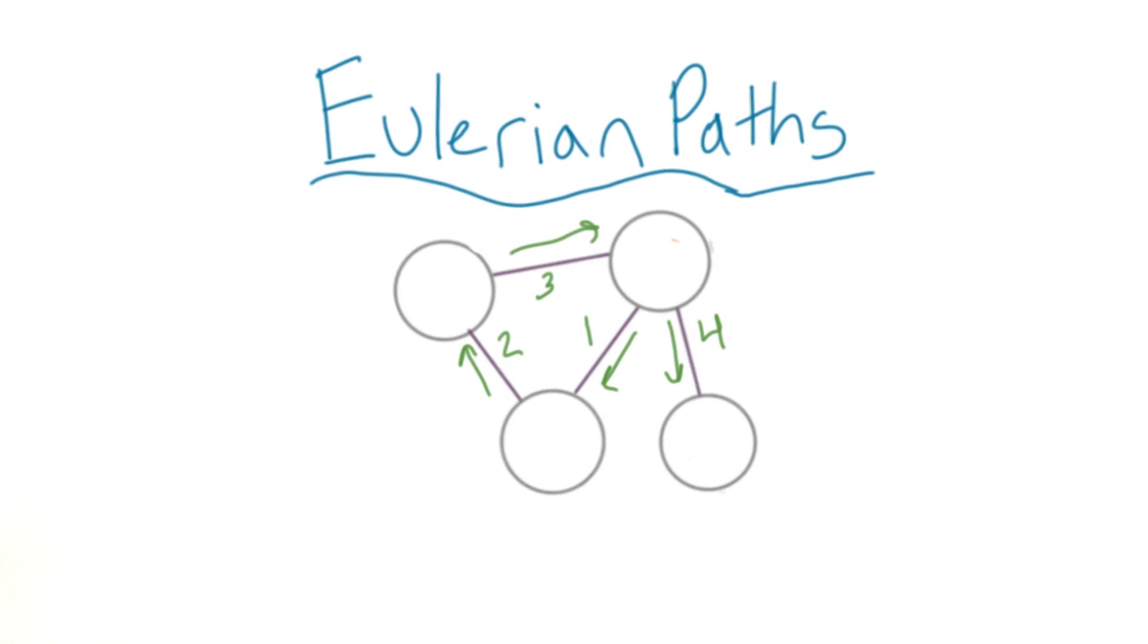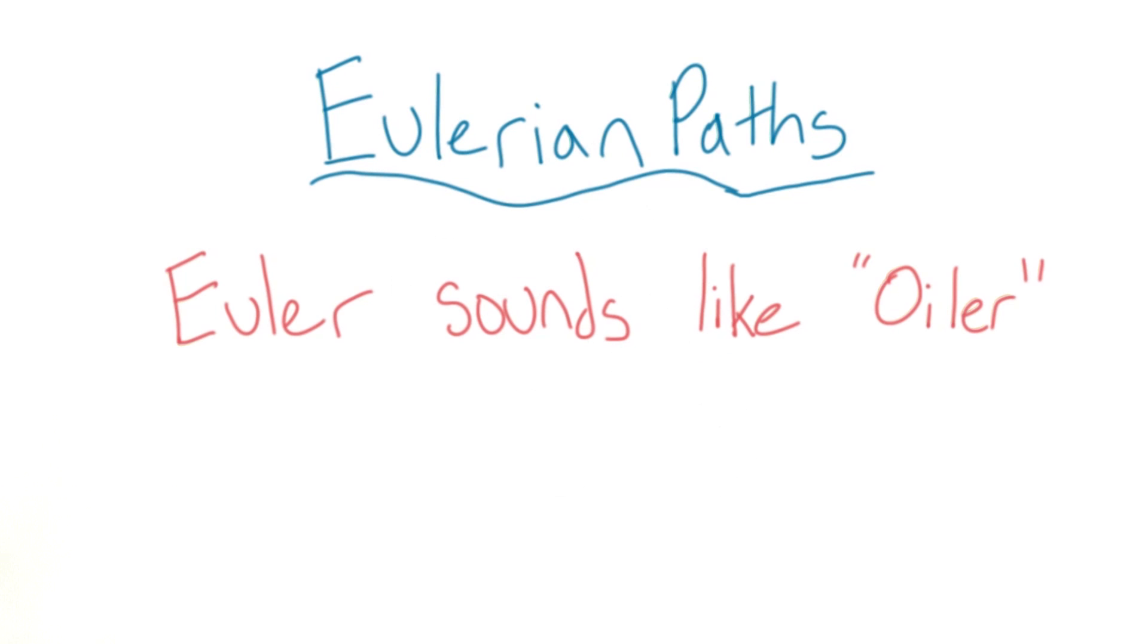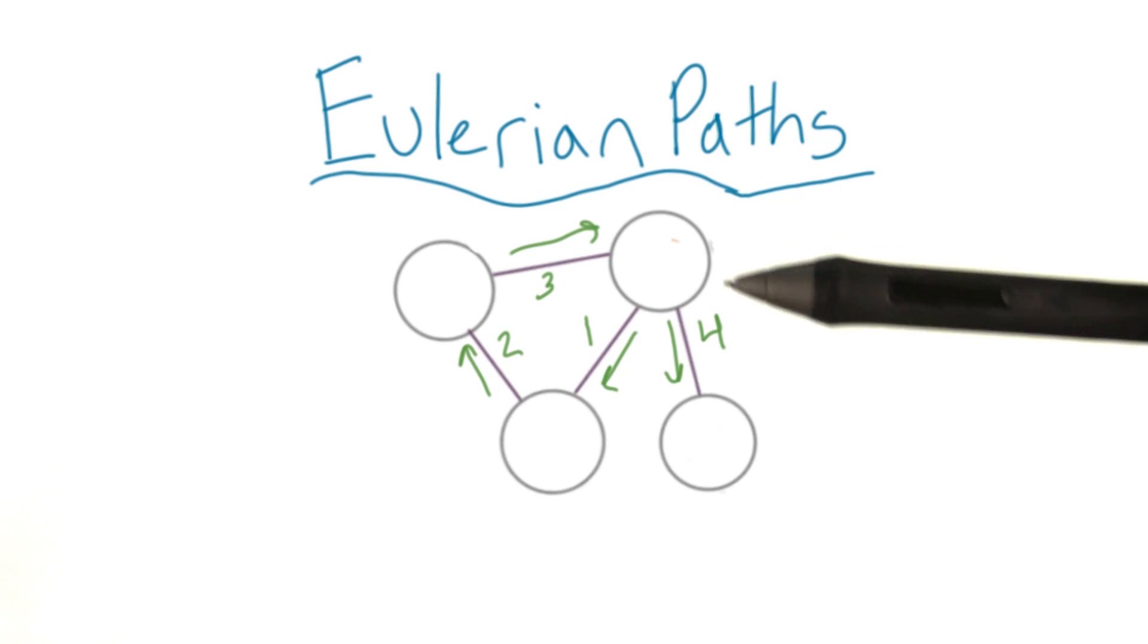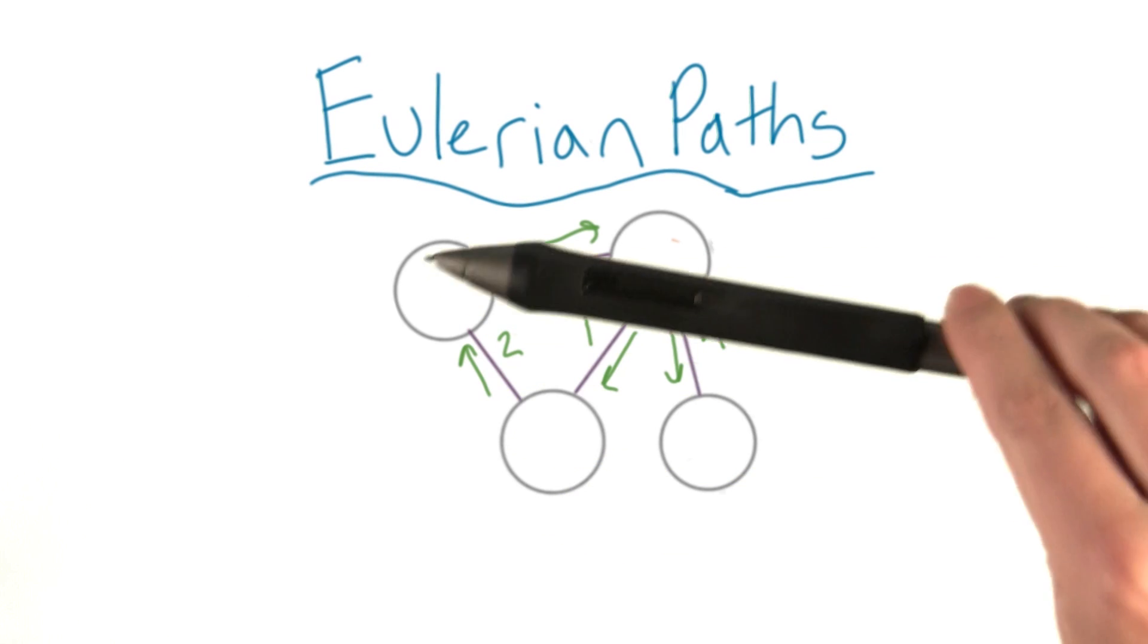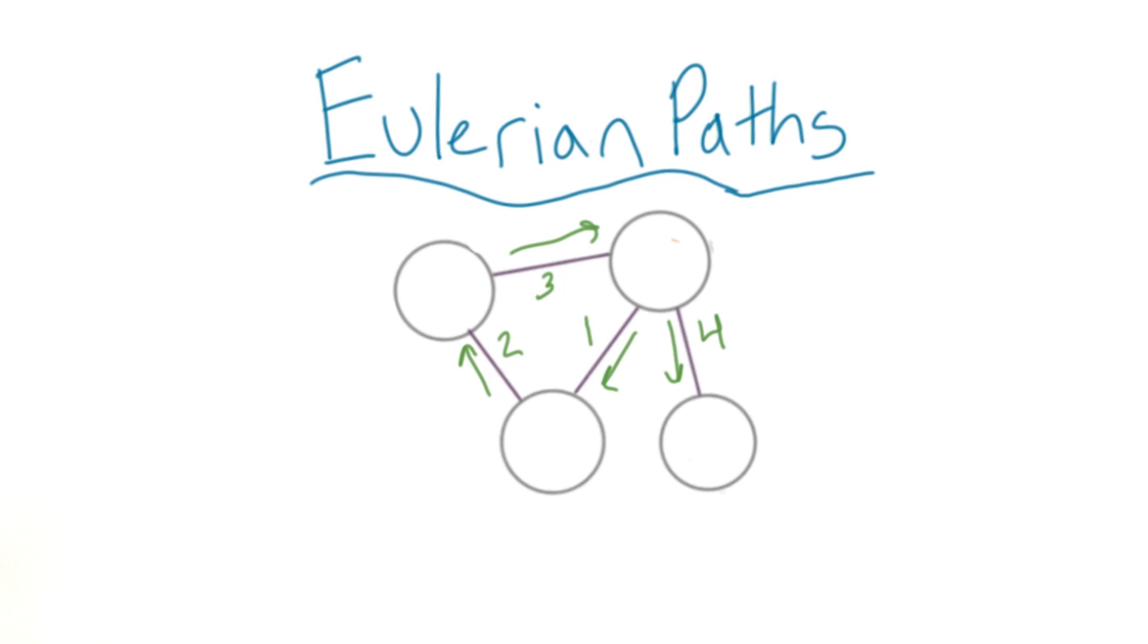That path is called an Eulerian path. Yes, it's pronounced Eulerian after the famous mathematician Euler. In a basic Eulerian path, you start at one node, traverse through all edges, and might end up at a different node.